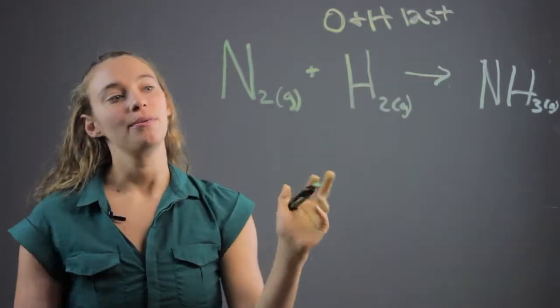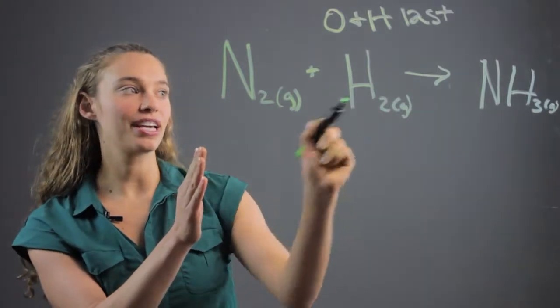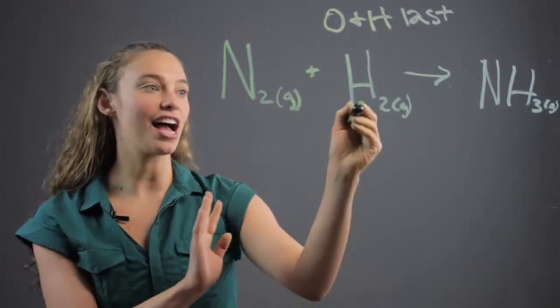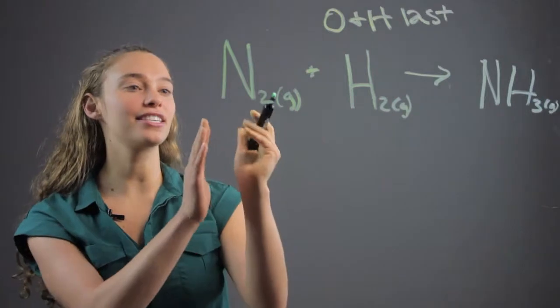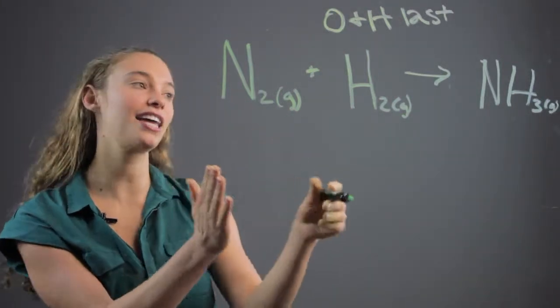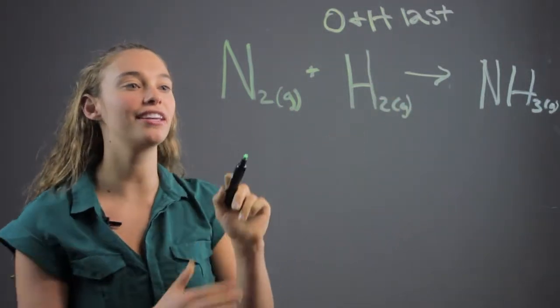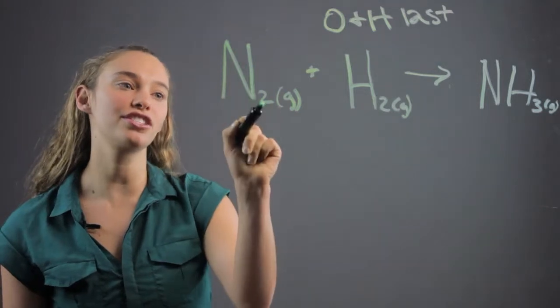We're going to start off with nitrogen because hydrogen we want to do last. Now, we want to remember that we have the same nitrogen on the reactant side as we do on the product side. So here we have two nitrogen, right, because it's N2.